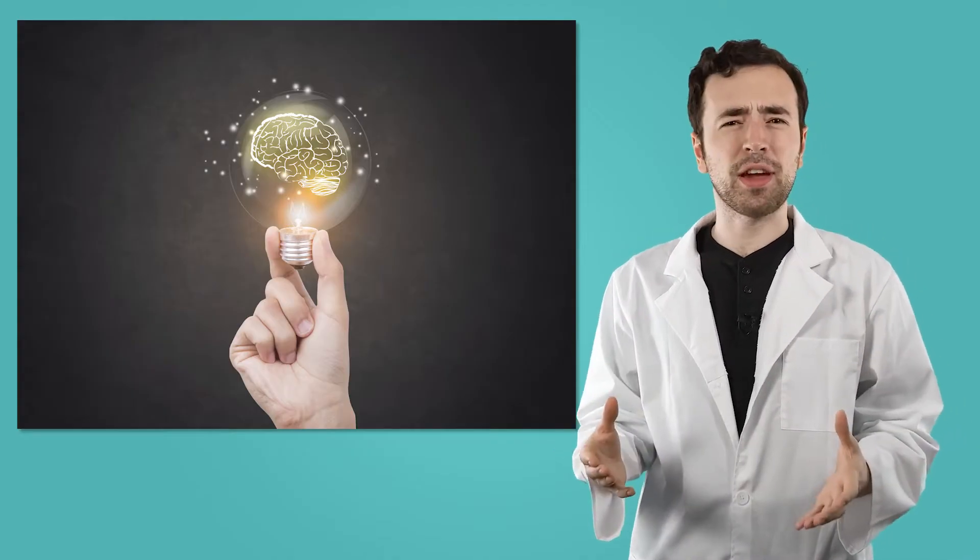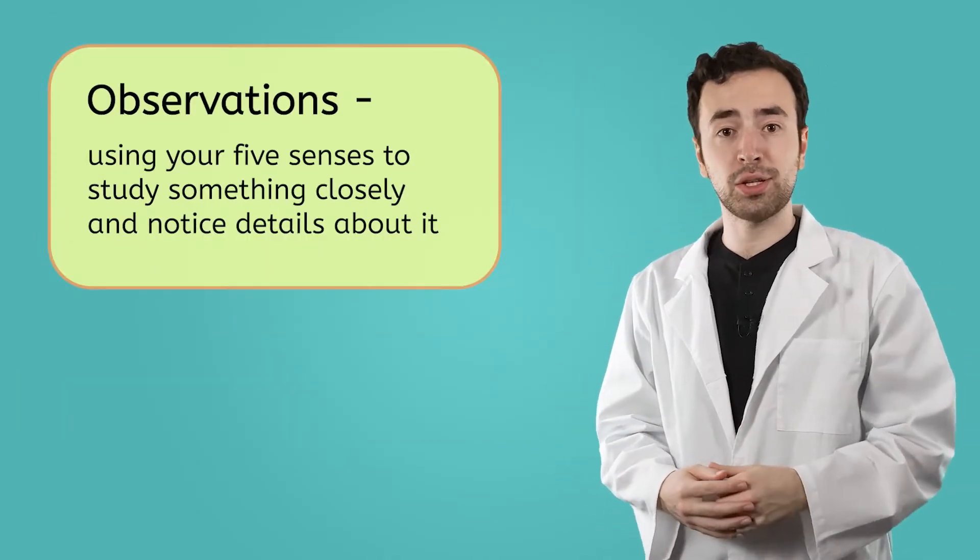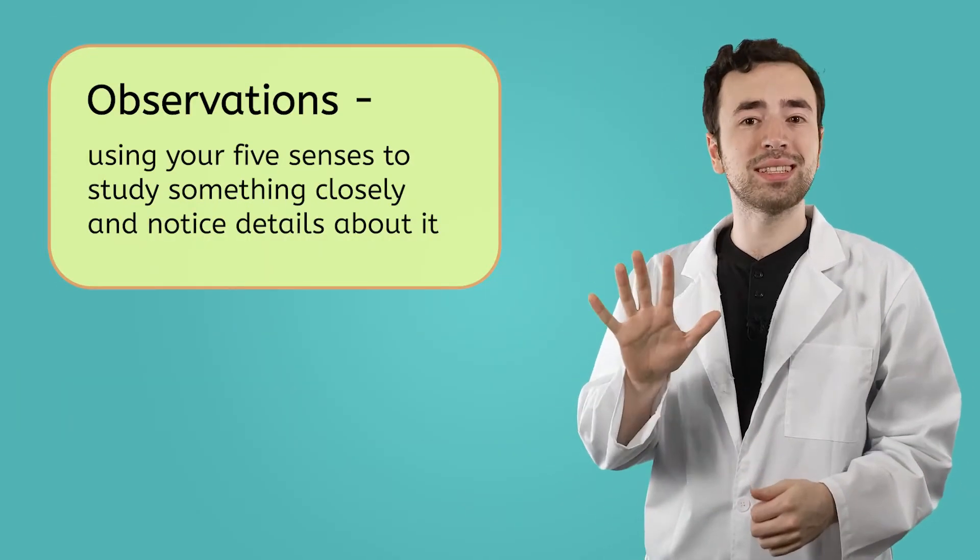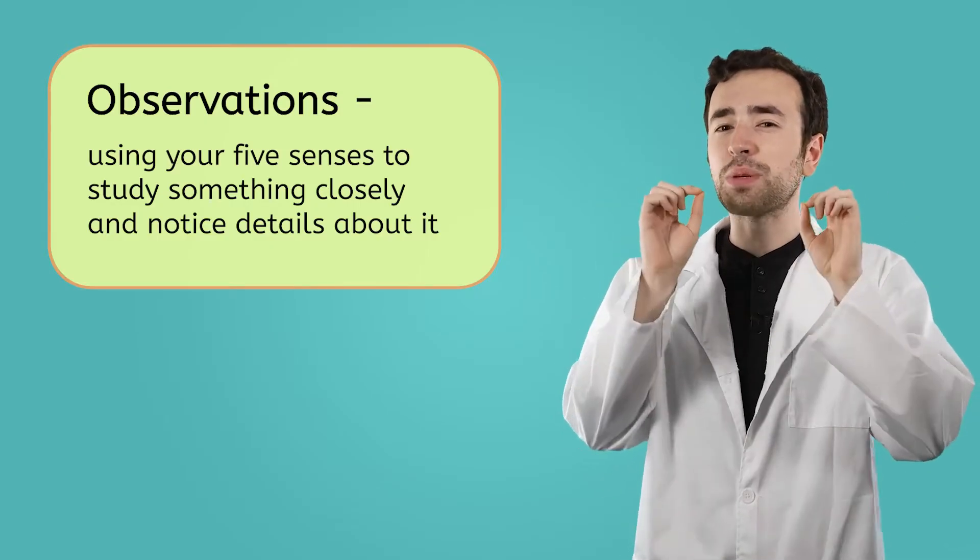So, how do scientists answer these questions? And now that they think about it, how do they come up with all of them in the first place? Well, another huge part of thinking like a scientist is making observations. When a scientist makes an observation, they use their five senses to study an object or an event closely and find specific details about them. This lets them gather evidence or proof and information. Let's try making an observation ourselves.